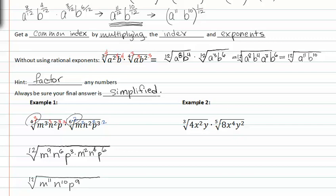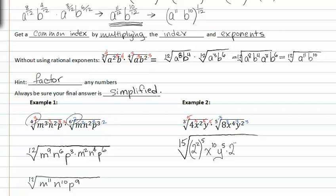Building up example two, I need my indexes to match again. The common index is going to be fifteen, so I'm going to build the first index up by five — whatever I do to the index, I must also do to the exponents inside. Likewise with the index of five, I'm going to multiply it by three, so I also multiply my exponents by three. It's good practice once you have a common index to rewrite everything inside: four is the same as two squared, raised to the fifth; x to the tenth; y to the fifth. Eight is the same as two cubed, all raised to the third; x to the four times three, which is twelve; y to the sixth.